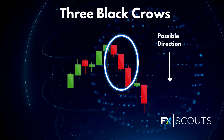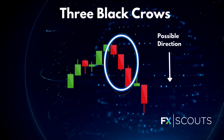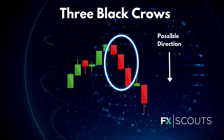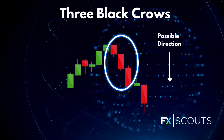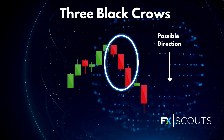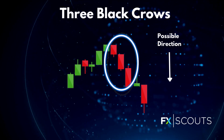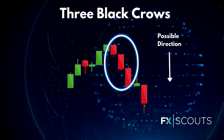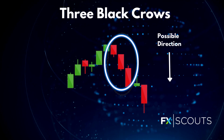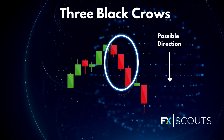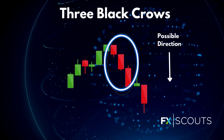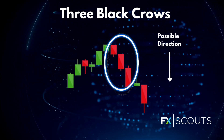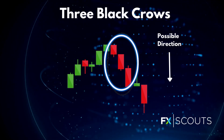Next you get three black crows — this candlestick pattern comprises three long red candles with short or non-existent wicks. Each session opens at a similar price to the previous day but selling pressures push the price lower and lower with each close. Traders usually interpret this pattern as the start of a bearish downtrend because the sellers have overtaken the buyers with three consecutive candles.